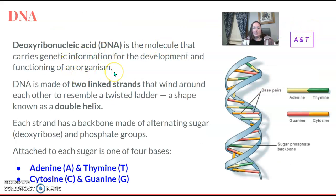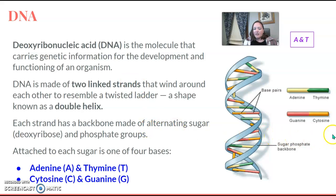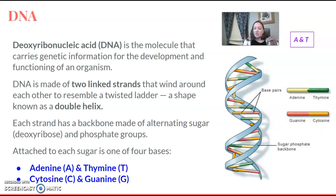DNA is the molecule that carries the genetic information for the development and functioning of an organism. It has two linked strands that wind around, and the attached sugars have base pairs. I would suggest knowing these pairs: adenine pairs with thymine, and guanine pairs with cytosine — so G and C, and A and T go together. You might be asked to match them.